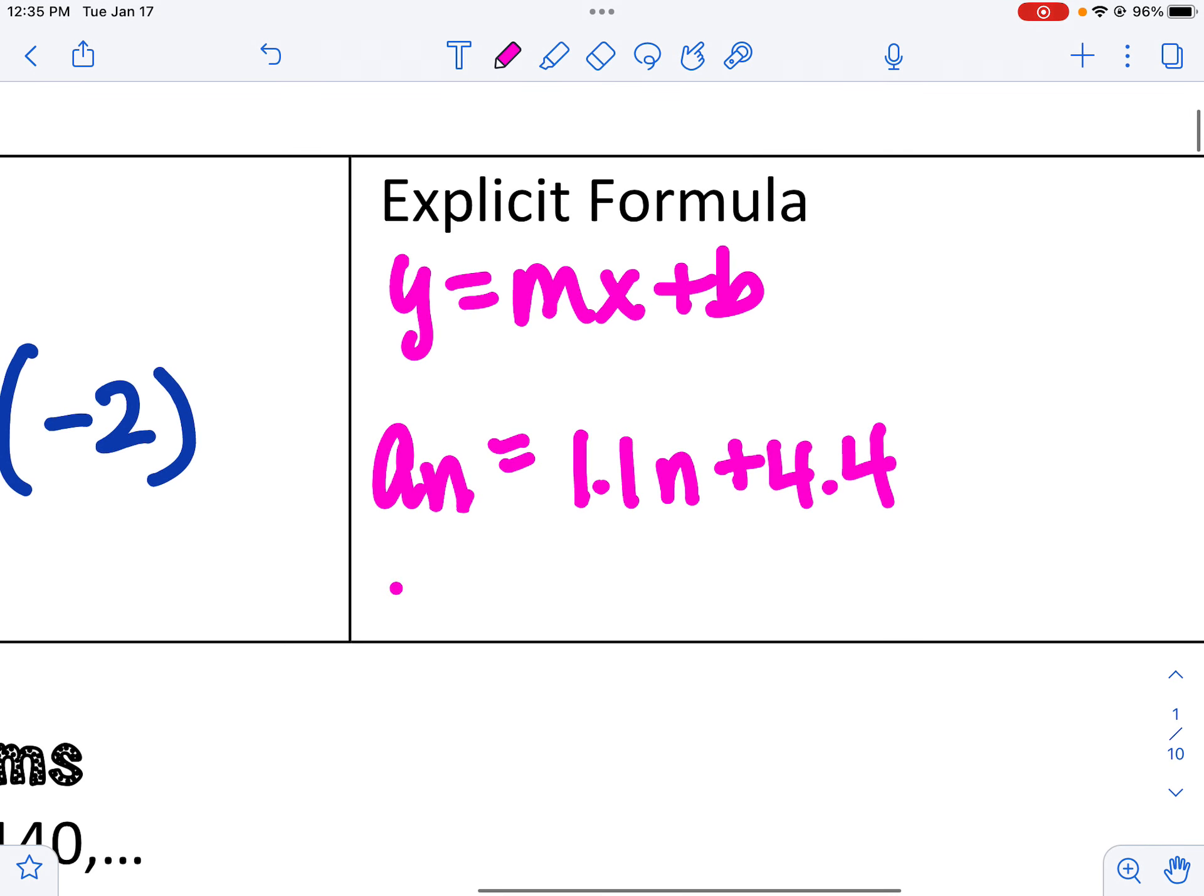So don't forget to go back and find that y-intercept, which is a sub zero. So if I write this out, it'd be the common difference times n plus the zero term.